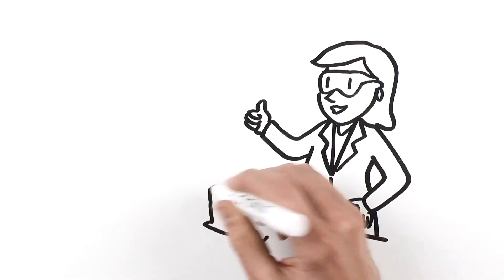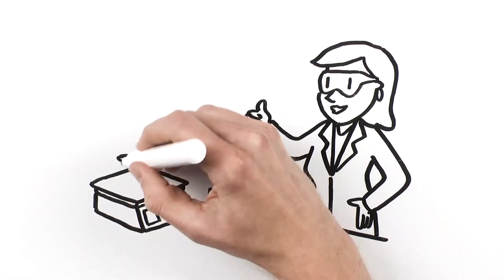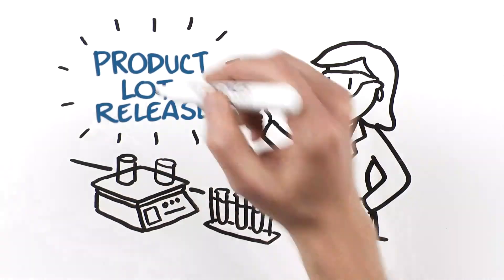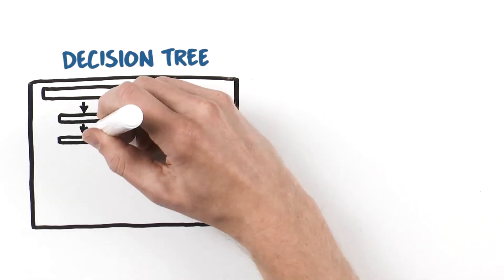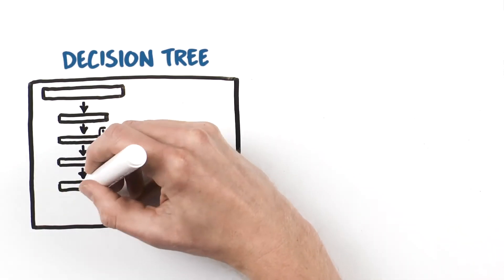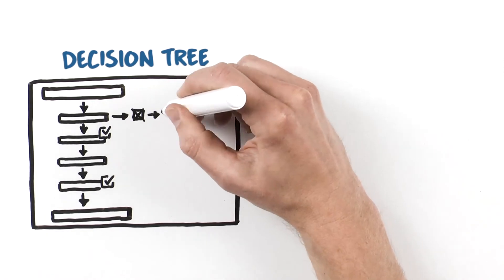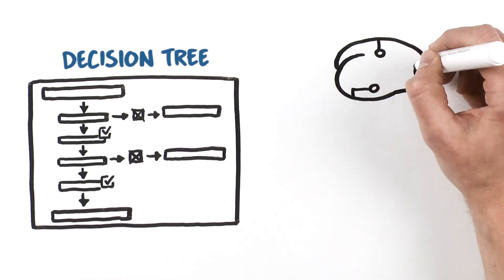This decision tree is useful for developing and qualifying either generic or process-specific assays. It shows how to integrate orthogonal 2DE and MS methods to enable a data-driven decision on whether to use a generic or process-specific HCP assay.